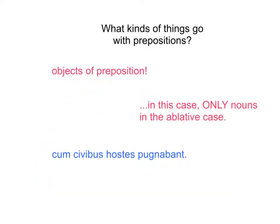On the other hand, what kinds of things go with prepositions? Well, prepositions take a noun that's an object of prep. And with cum, that preposition can only take one case — the ablative case. So, in the following sentence — 'cum civibus hostes pugnabant' — you'll notice two things. There's only one clause. That tells us we don't have a clause marker, and that alone actually would be enough to tell us.